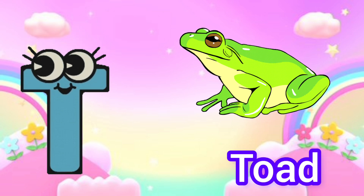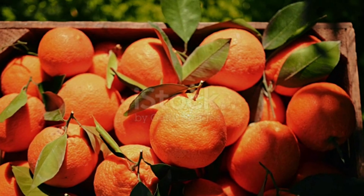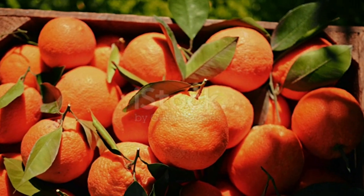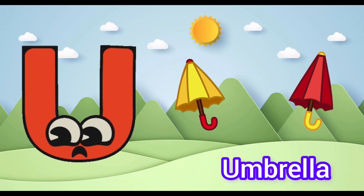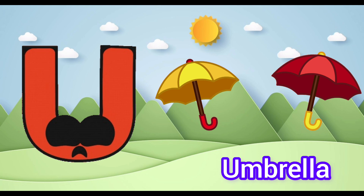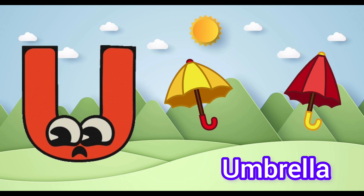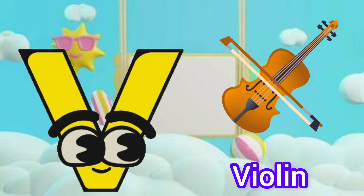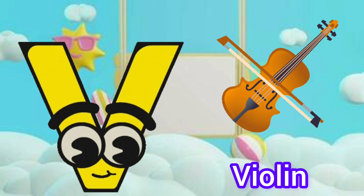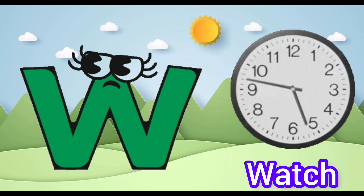T is for toad, t-t-toad. U is for umbrella, u-u-umbrella. V is for violin, v-v-violin.